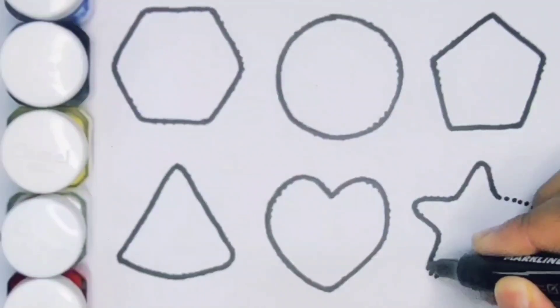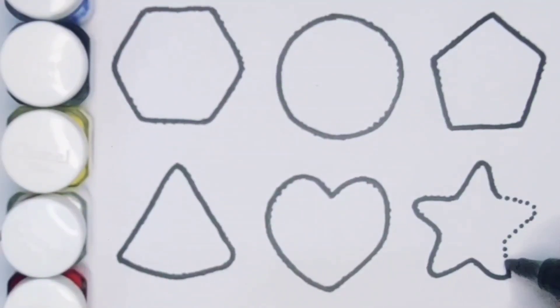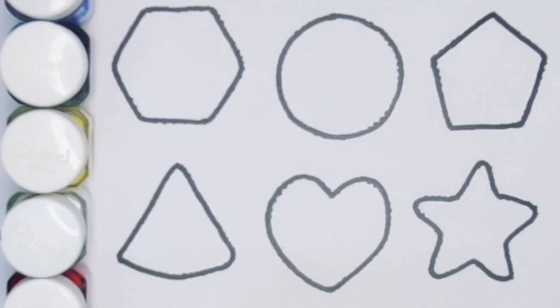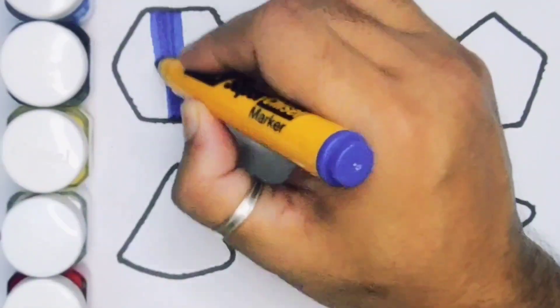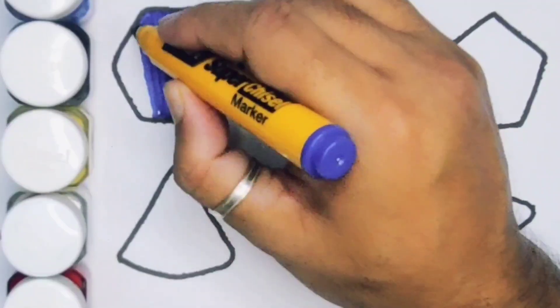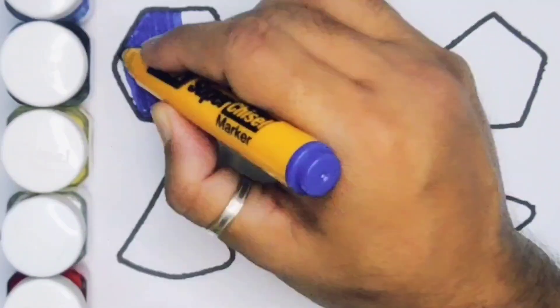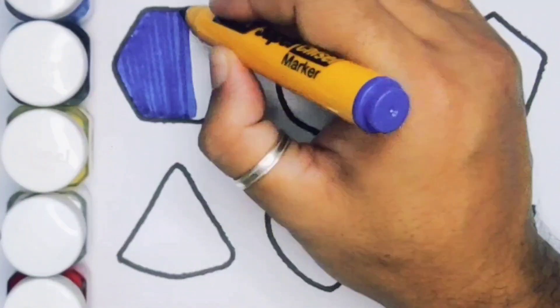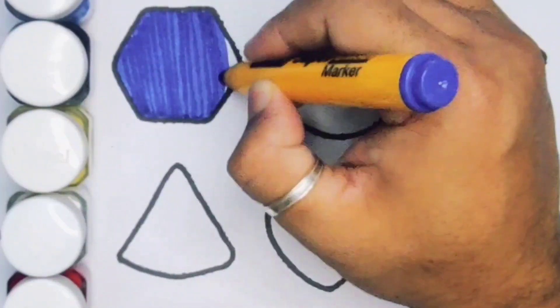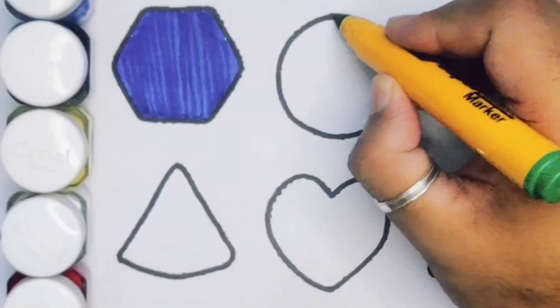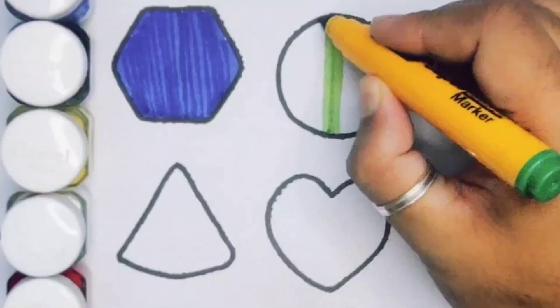Now put the color. Blue color, hexagon. Next green color, circle.